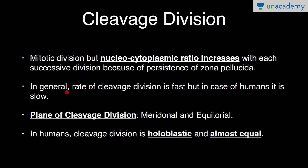In general, the rate of cleavage division is fast, but in humans it is slow. There are two planes of cleavage division: meridional and equatorial. Meridional is a vertical plane passing through the animal-vegetal pole axis; equatorial is a horizontal plane passing through the center of the embryo. In humans, cleavage division is holoblastic — complete embryonal division takes place — and almost equal-sized blastomeres are formed.